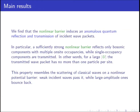We find that the non-linear barrier induces an anomalous quantum reflection and transmission of incident wave packets. In particular, a sufficiently strong non-linear barrier reflects only bosonic components with multiple on-site occupancies, while single occupancy components are transmitted. In other words, for a large non-linear strength, the transmitted wave packet has no more than one particle per site.